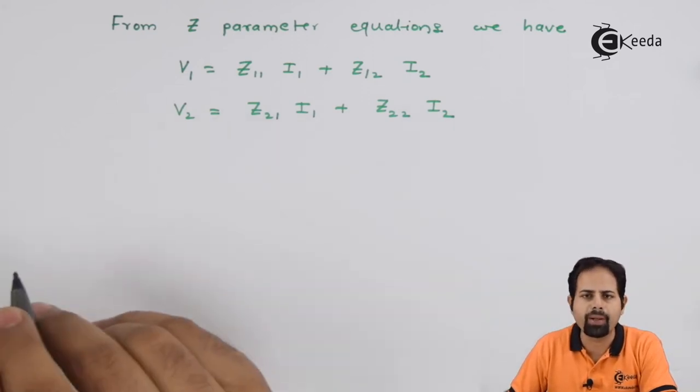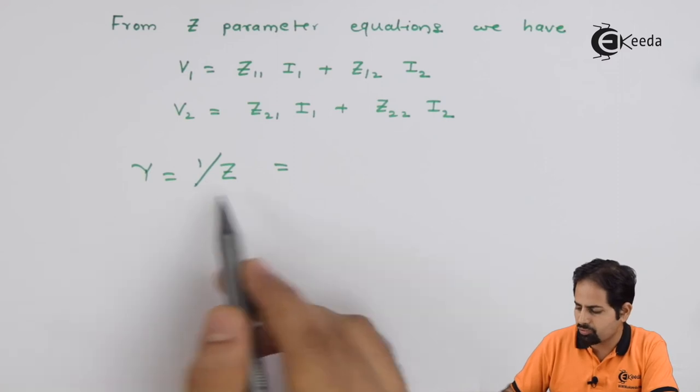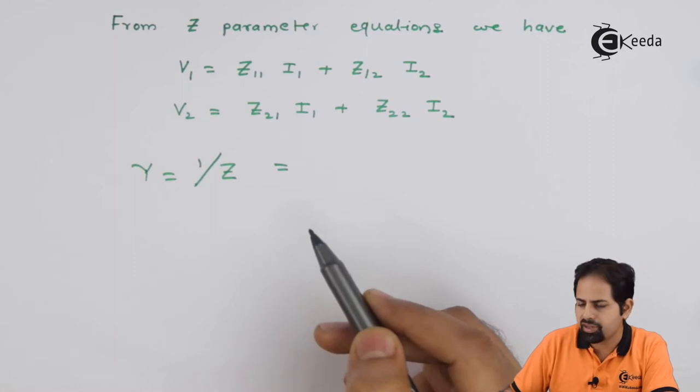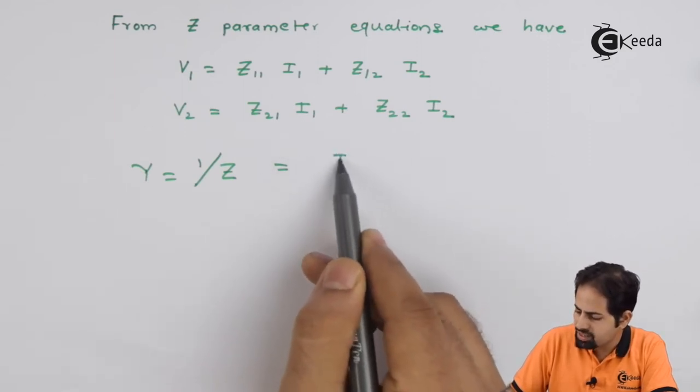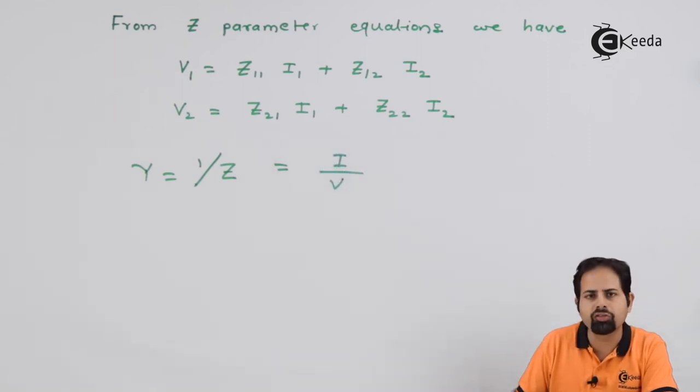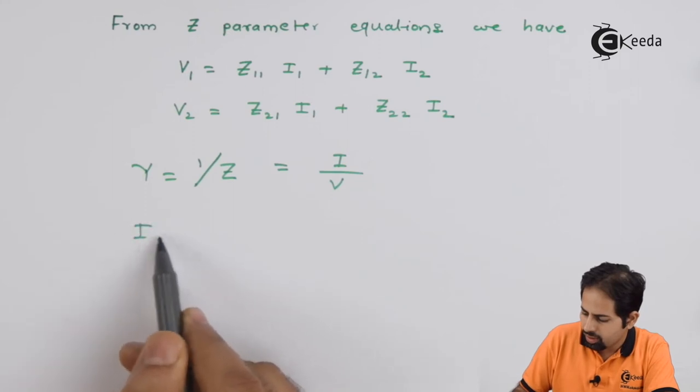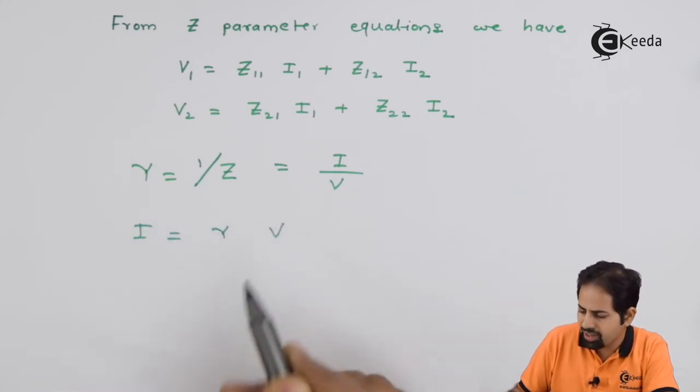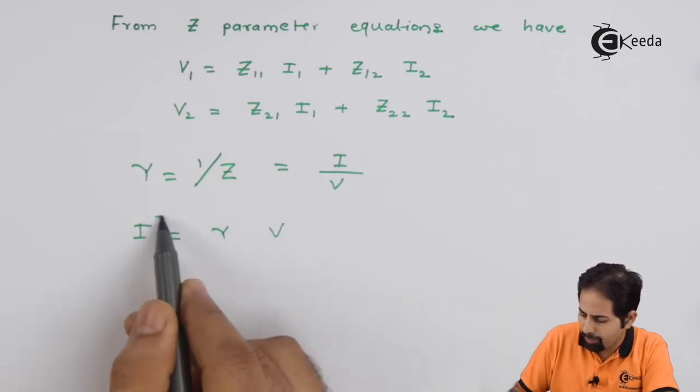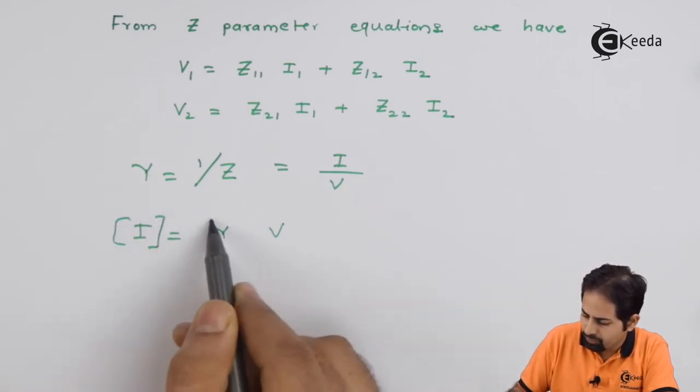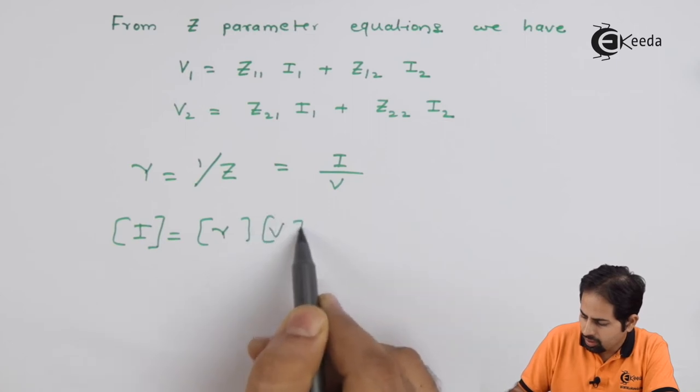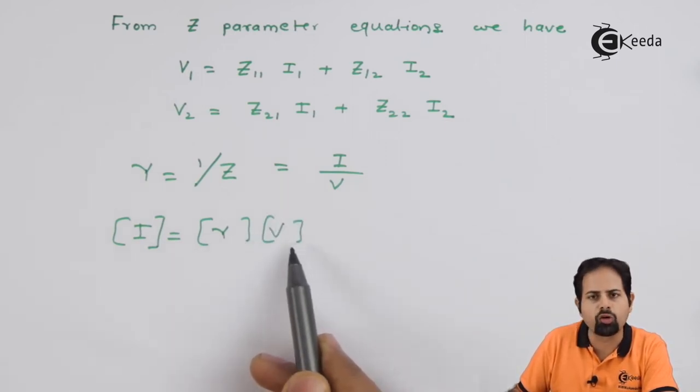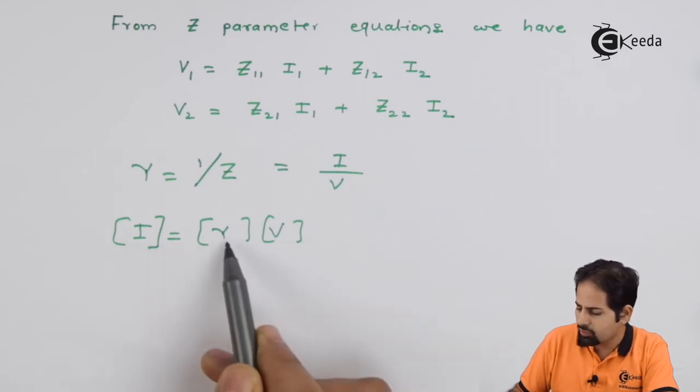Now we want Y parameter. The basic structure for Y parameter is Y is 1 upon Z. Now Z is V upon I, so Y is I upon V. Or in matrix form, for Y parameters we know that I matrix is equal to Y matrix multiplied by V for voltage matrix.